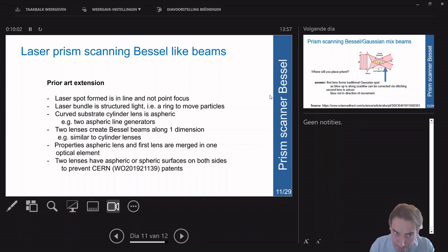Finally, the two lenses, the aspheric line generators, have curved substrates on both sides. This is a bit to prevent the CERN patent.